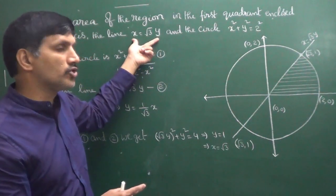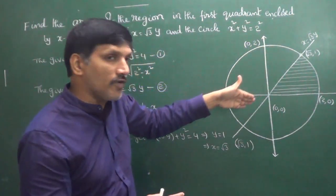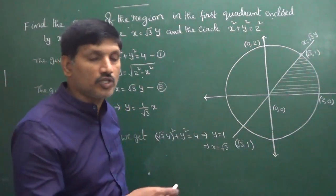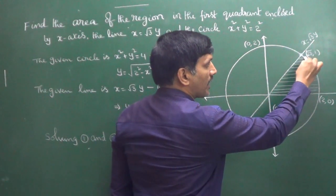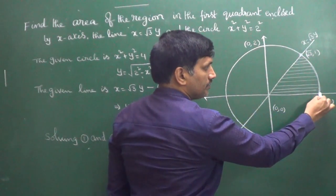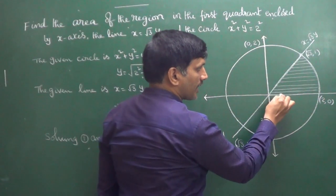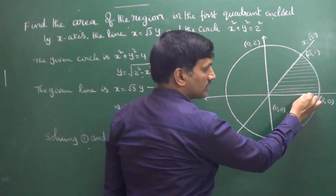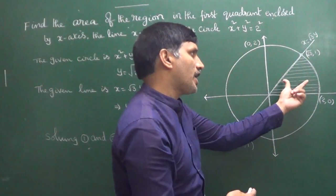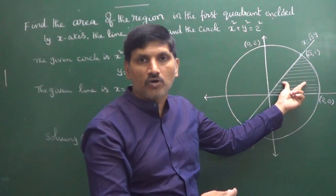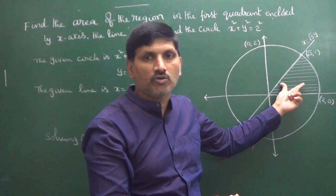So the line is x = √3·y. The question asks us to find the area of the region bounded by the circle, the line, and the x-axis in the first quadrant — that means this shaded area we have to find out.